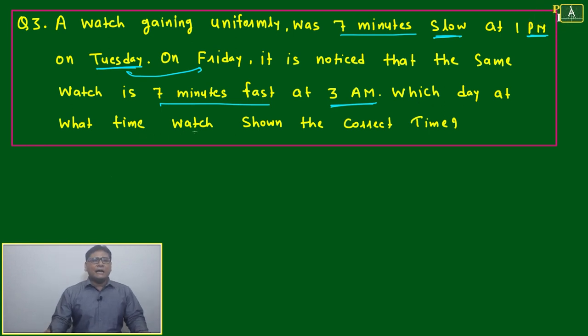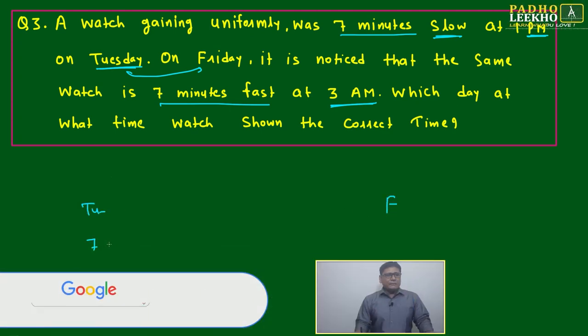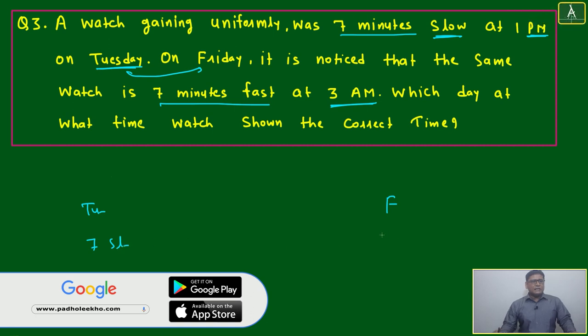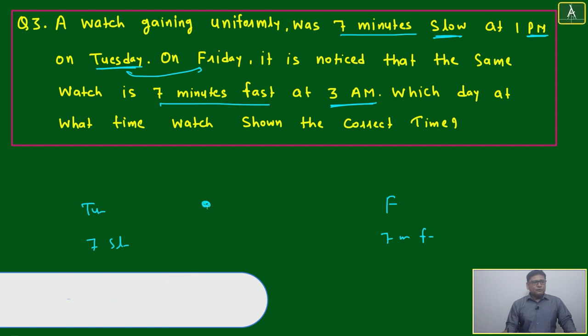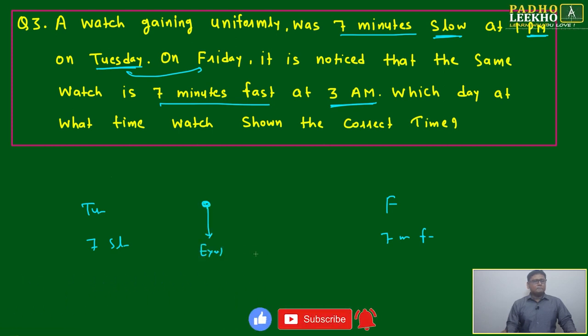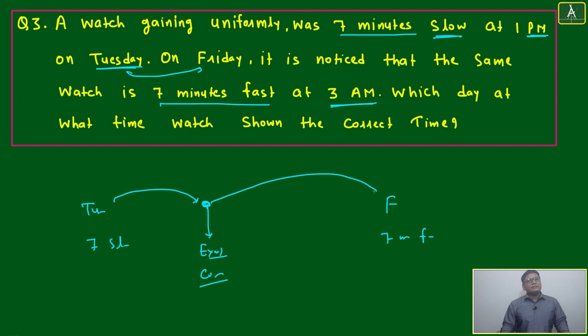Which day and at what time does the watch show the correct time? One is Tuesday, one is Friday. This time it was 7 minutes slow, this time it is 7 minutes fast. Means in between some time would be there when it would be exact time, or correct time, when 7 minutes slow would be compensated and the watch was showing exact correct time. This one particular moment, again it will keep on gaining and it will become fast.